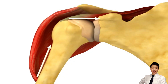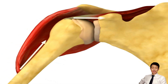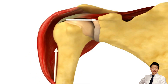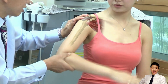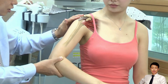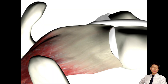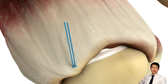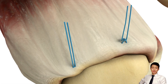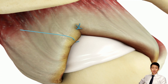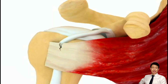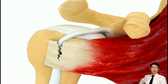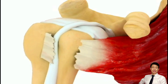Strengthening the rotator cuff muscles is important; however, exercises must be biomechanically sound. Future videos will demonstrate these recommended exercises. Tears are classified into crescent-shaped and U-shaped configurations. Crescent tears are often reparable with minimal tension, while U-shaped tears typically require margin convergence due to medial extension. The location of the tear, especially involvement of the cable or subscapularis, significantly affects function.